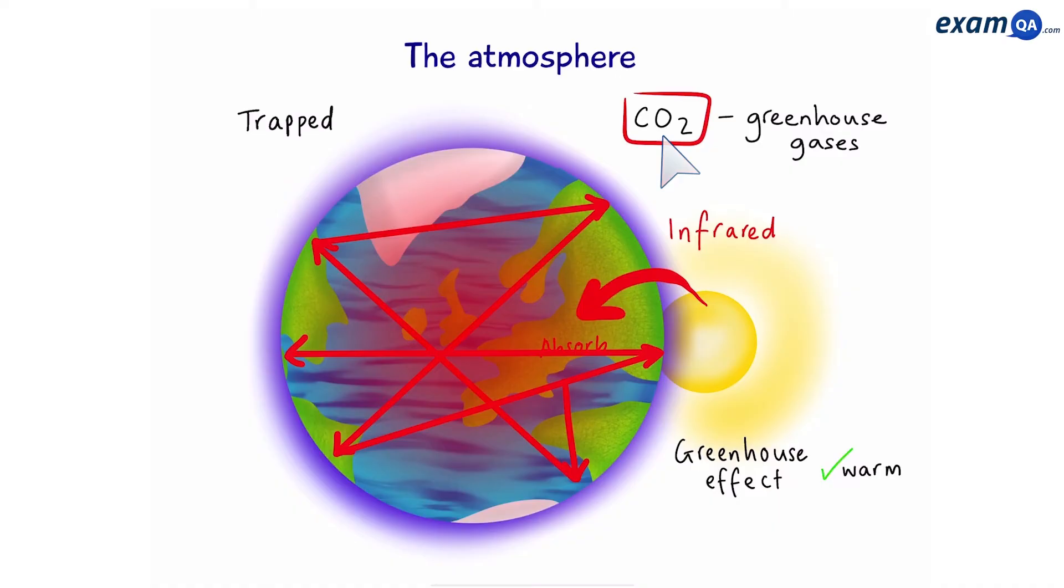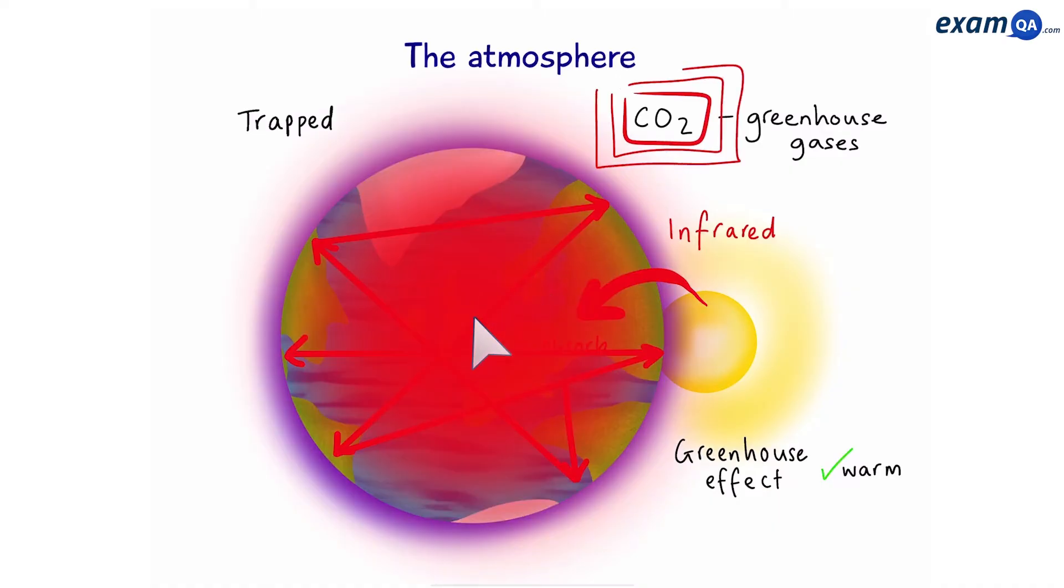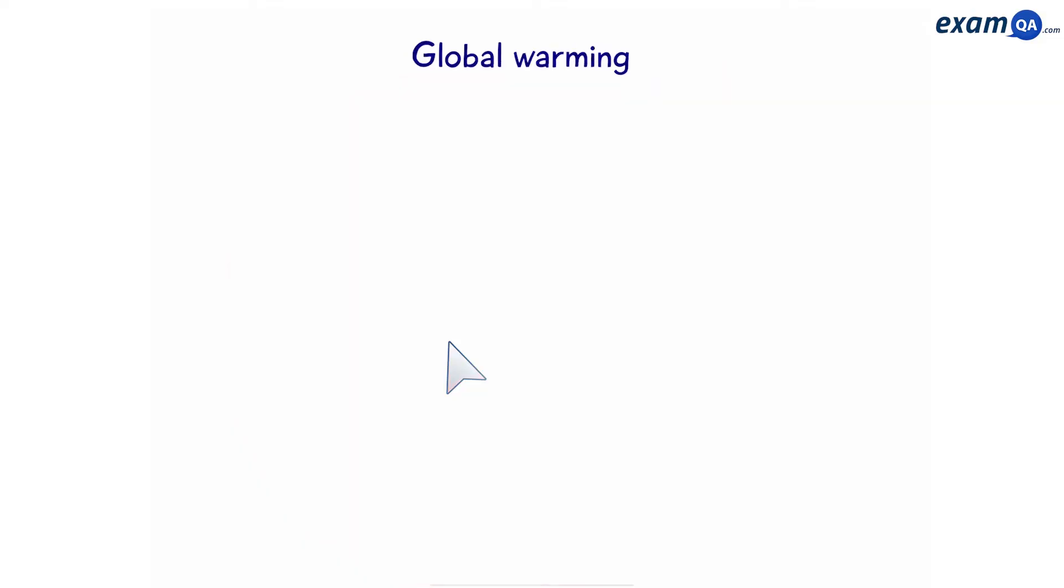However, the problem is that too much carbon dioxide can trap in too much infrared radiation. And this can lead to global warming. So, global warming is caused by more greenhouse gases such as carbon dioxide present in the atmosphere.